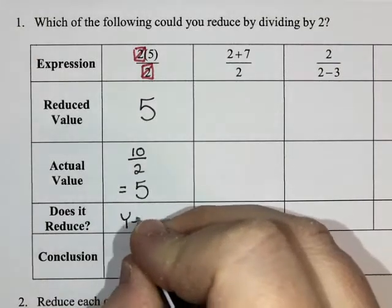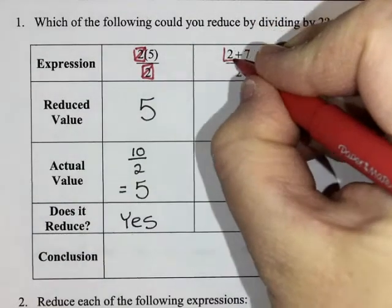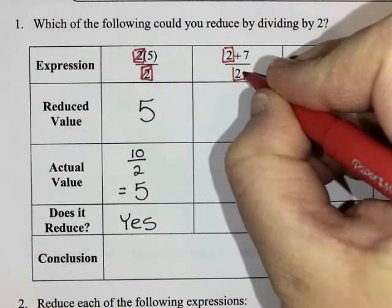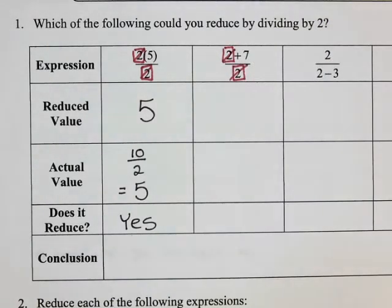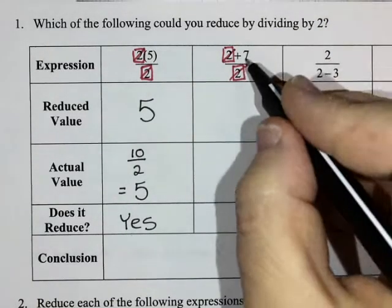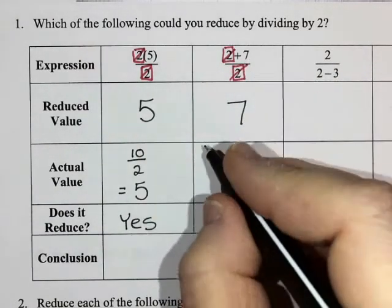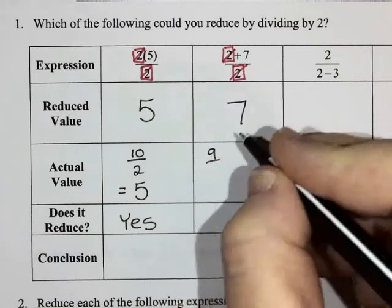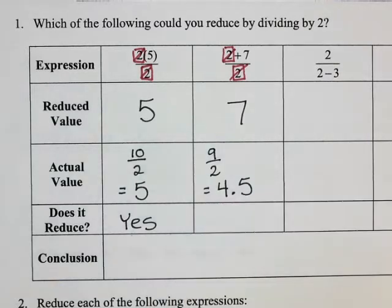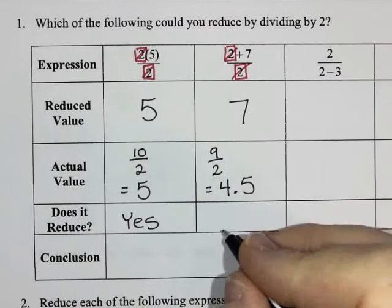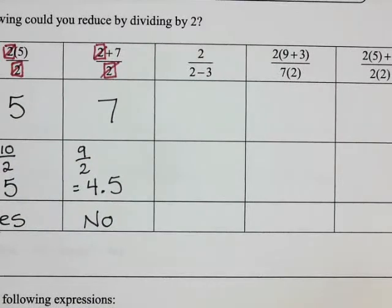What about the next one? I have a two here and a two here. If I divide out those twos I'd just be left with seven. Does that really work? Two plus seven is nine, divided by two is about four point five. So did that work? No, that did not work.